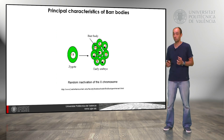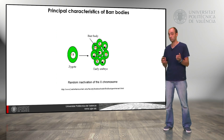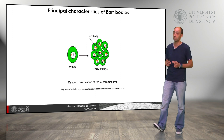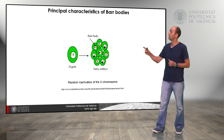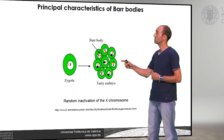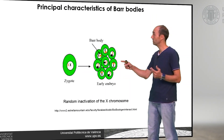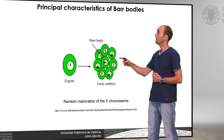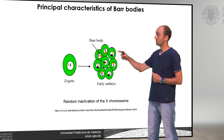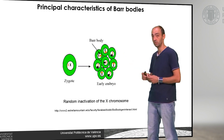We can see this in this picture. We have a zygote with two X chromosomes — one is in orange color and the other is in black. In the embryo, we have many cells, and some of the cells inactivate one of these chromosomes — in this case the orange chromosome — while in other cells, the chromosome that is inactivated is the black chromosome.